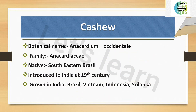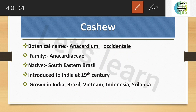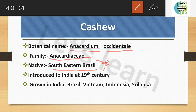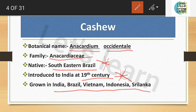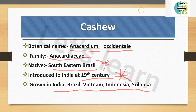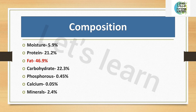The botanical name of cashew is Anacardium occidentale and it belongs to the family Anacardiaceae. It is native to southeastern Brazil. It was introduced to India in the 19th century and is mainly grown in India, Brazil, Vietnam, Indonesia, Sri Lanka, and many other places.